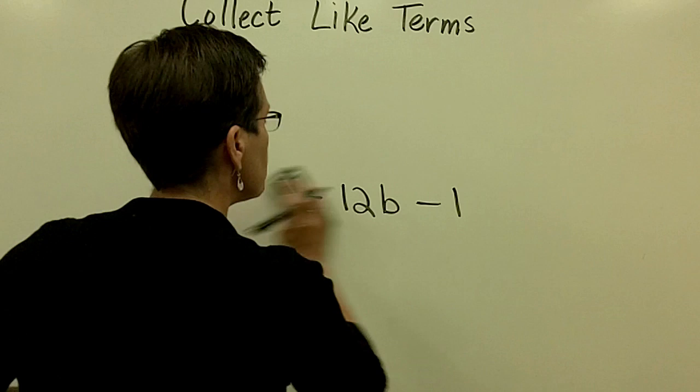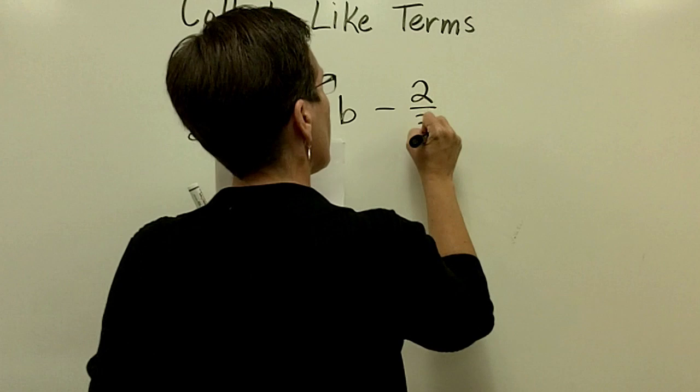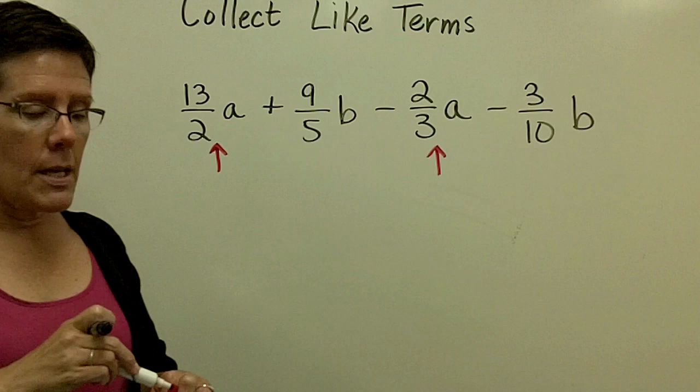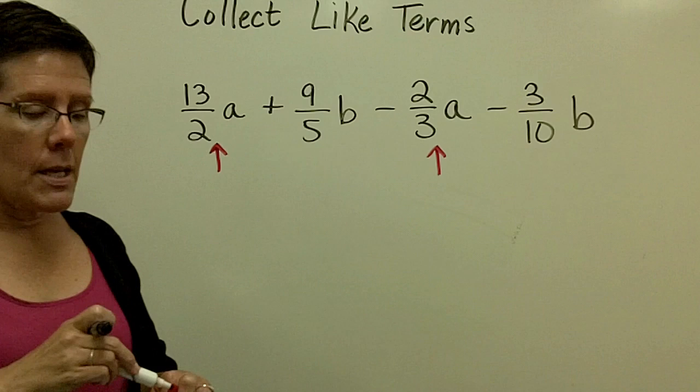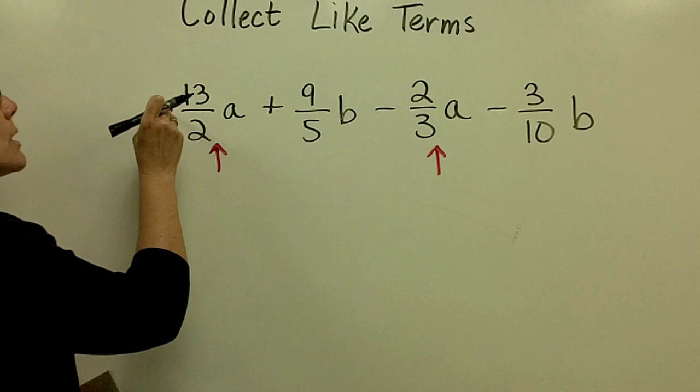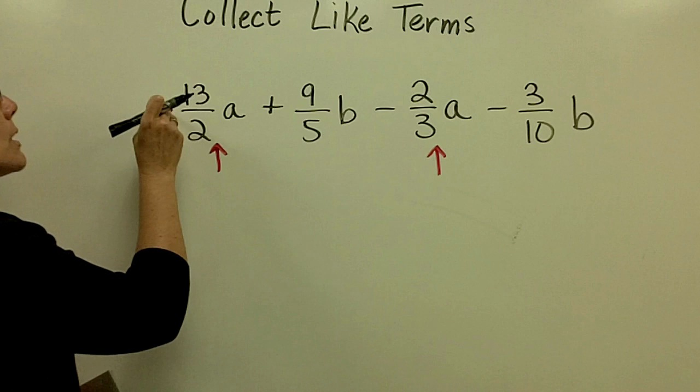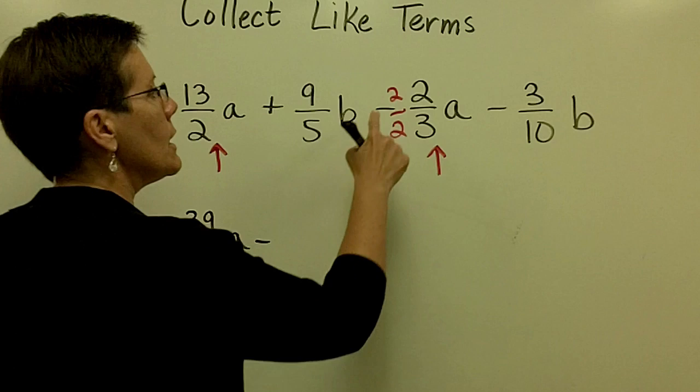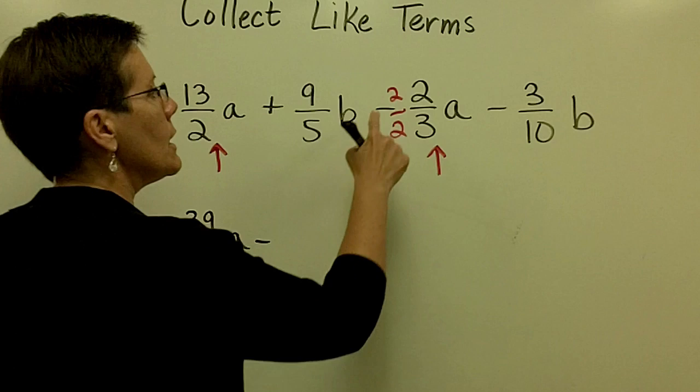Finally, I have a problem involving fractions. Let's take 13 over 2a, 9 over 5b, 2 thirds a, and 3 tenths b. So this one and this one are like terms because they both have a as their variable portion. And their common denominator needs to be a 6. This one having a denominator of 2, this one having a denominator of 3. I'm going to multiply this fraction by 3 over 3 to make that a 6. I'm going to multiply that fraction by a 2 over a 2. So here I have a 39 over 6a. I have a minus sign here. And here I have 4, 2 times 2 is 4 over 6a.